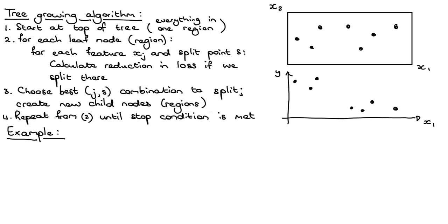At that point we put in a split, we decide we're going to split our data there, and we create two new child nodes corresponding to two new regions in our input space. Then we go back to step two and repeat, again considering all the leaf nodes, all features and all split points, calculating the reduction in loss for each, choosing the best feature and split combination, and continuing until the stop condition is met.